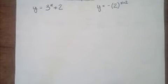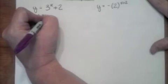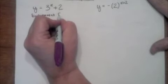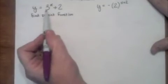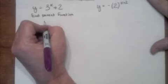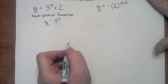Alright, so let's do some examples. I have two examples, and both are done the same way. What we have been doing is coming up with a table of values and then graphing it. However, first we're going to find the parent function — the parent function is just the function without anything added or subtracted from it. So in this case, the first one is y equals three to the x plus two; the parent function is y equals three to the x.